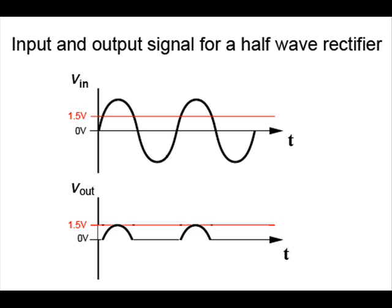The output voltage is defined as the input voltage minus V_on, so it makes sense if you think about it. As the input voltage begins to drop, so does the output voltage. Once the input voltage drops below 1.5 volts, the diode turns off, and the output voltage is again zero. The diode produces an output voltage waveform that is half-wave in pattern. This is why it's called a half-wave rectifier.